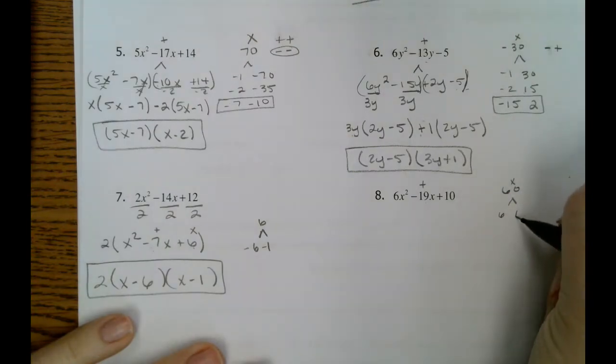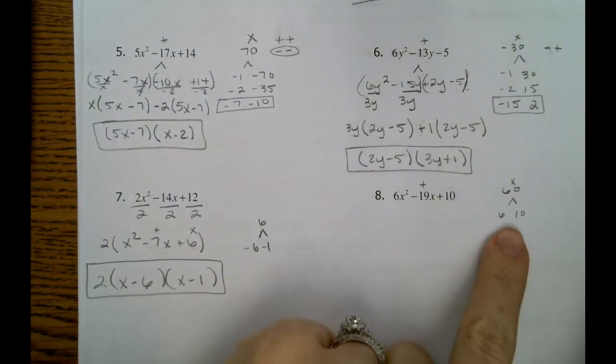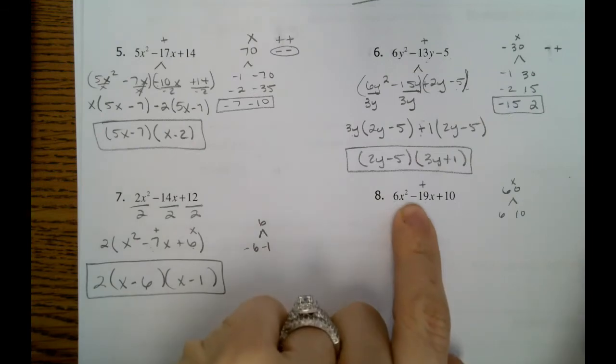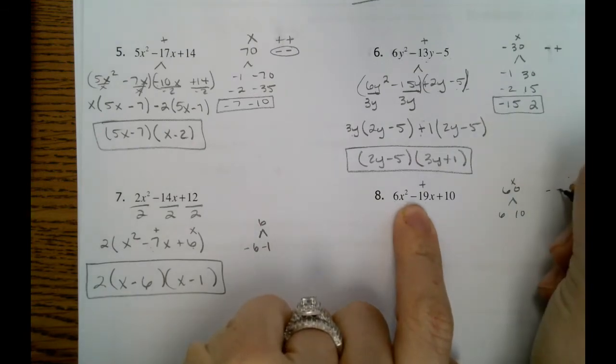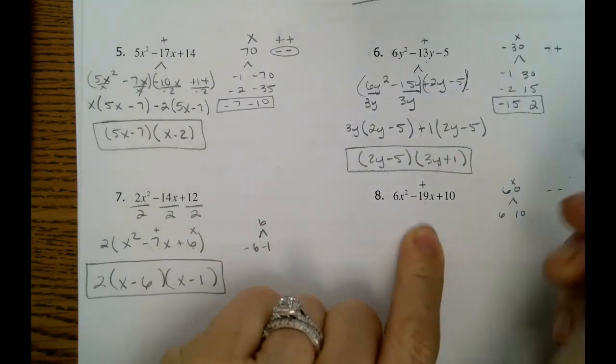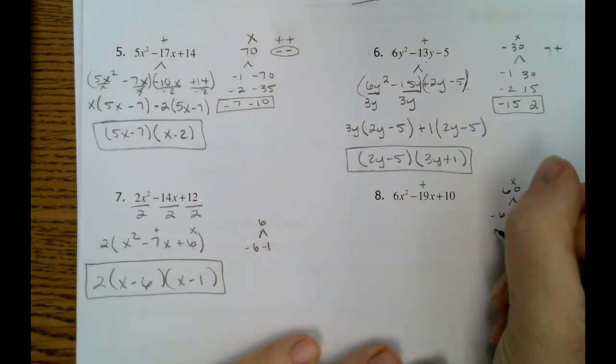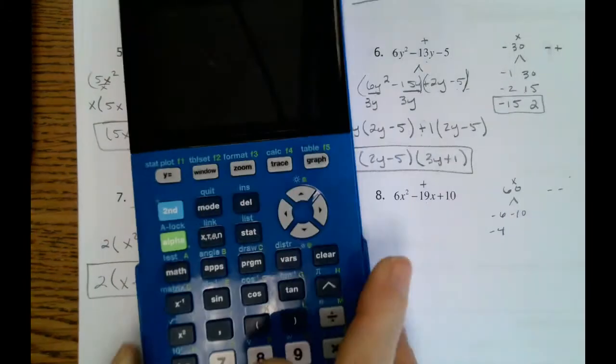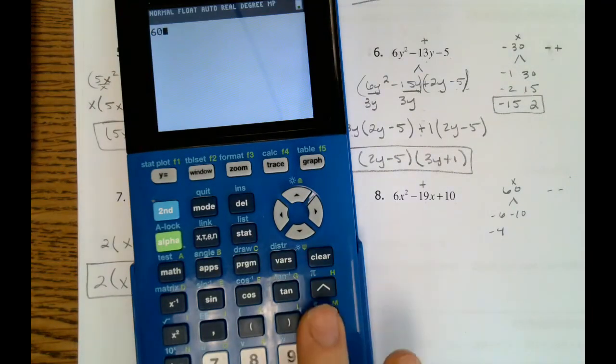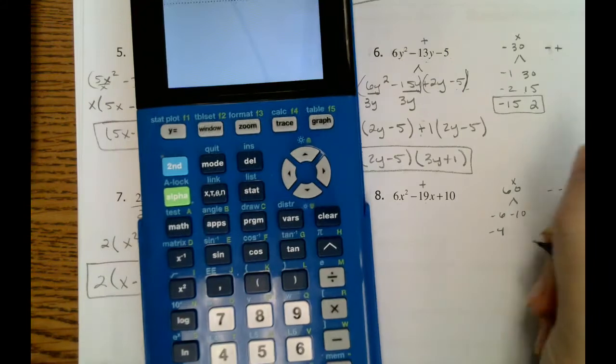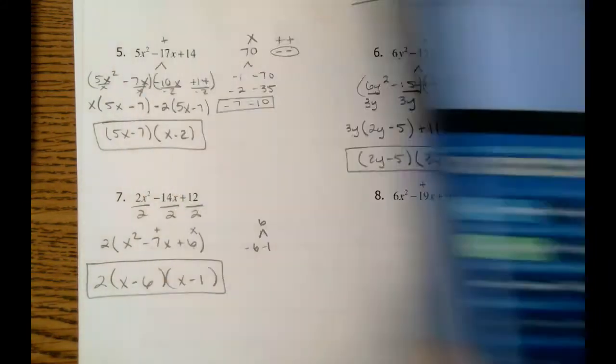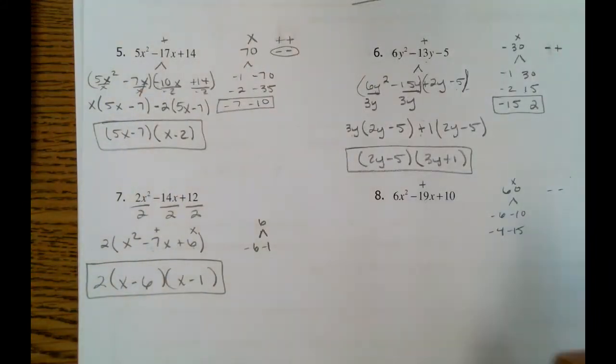So if we do 6 and 10, 6 and 10 will give us positive 16. We're going to need a negative number. So since we're doing negative numbers, we're going to need two negatives when we're doing this. So those won't get us to negative 19. Negative, oh, maybe negative 4. 4 and 15. There it is. So negative 4 and negative 15 will get us to negative 19.